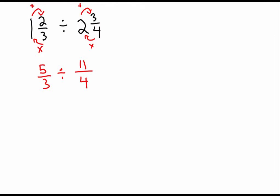Now I can do my keep change change method. So I'm going to keep him as five thirds. I'm going to change him into multiplication. And I'm going to change him as well into the reciprocal. And now I just go about multiplying. Five times four is 20. I go three times 11 is 33.